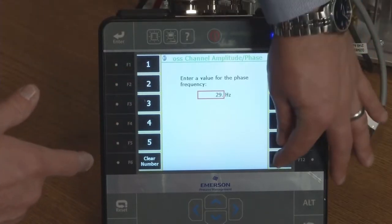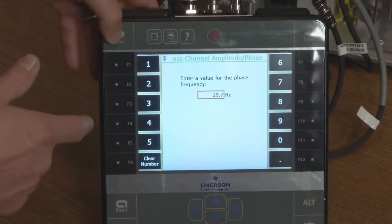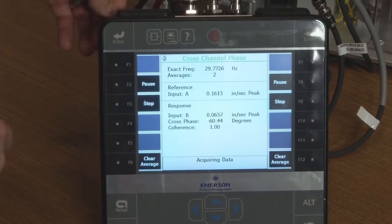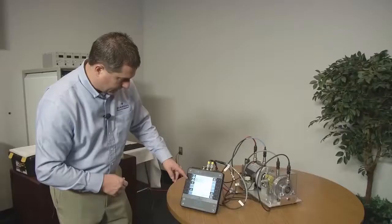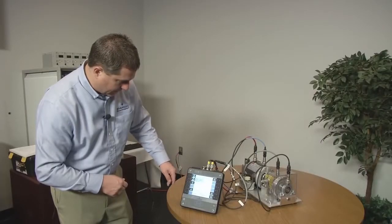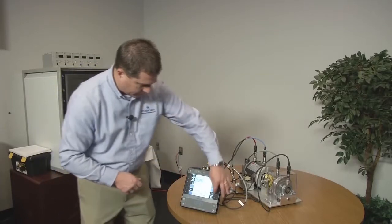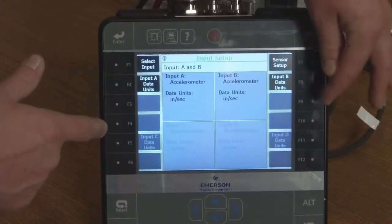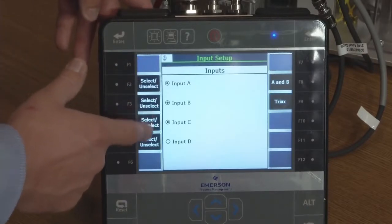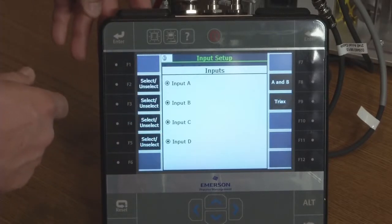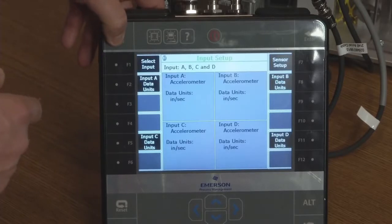I've just got A and B channels turned on. So I'm going to stop this. And I'm going to do the setup here. I'm going to turn on my inputs. Turn on channels C and D. So I've got four channels here. Press enter. They're all set up for inches per second. And that looks good.